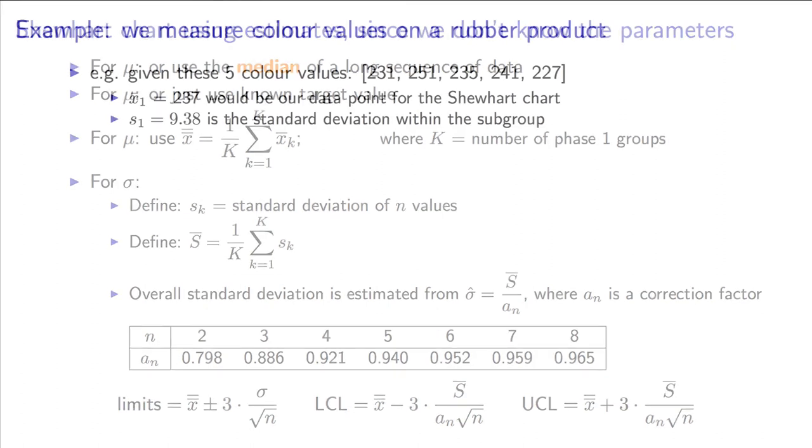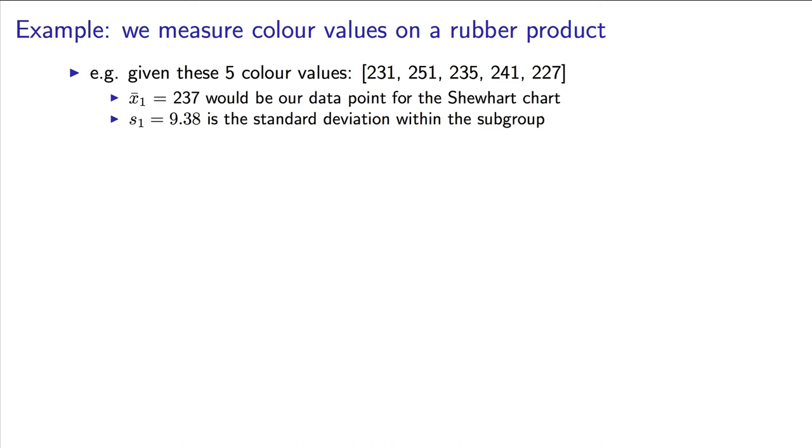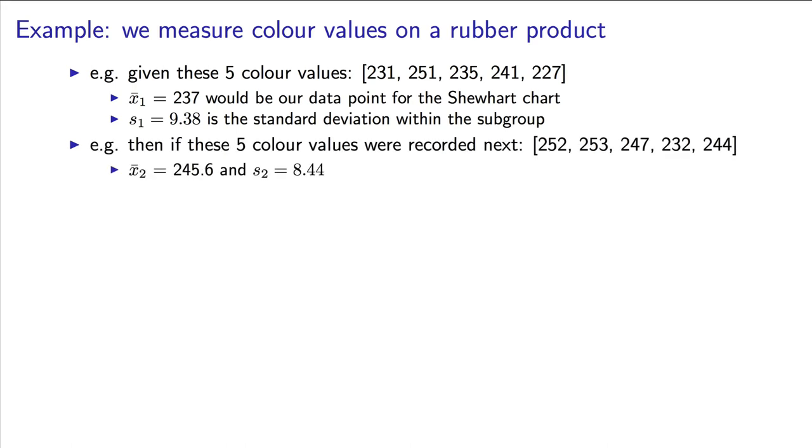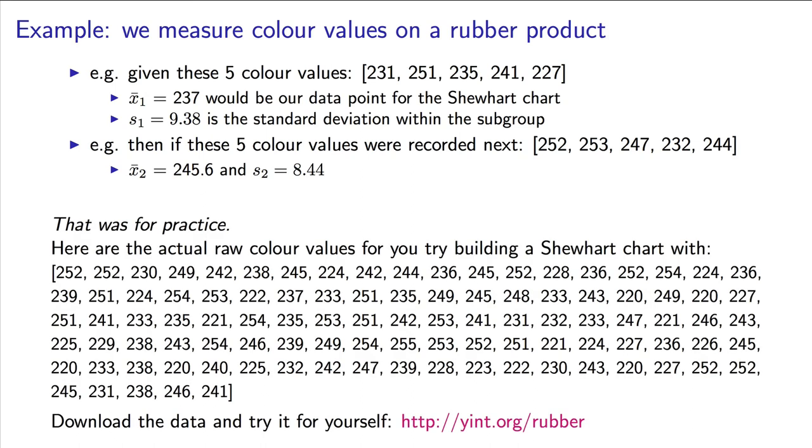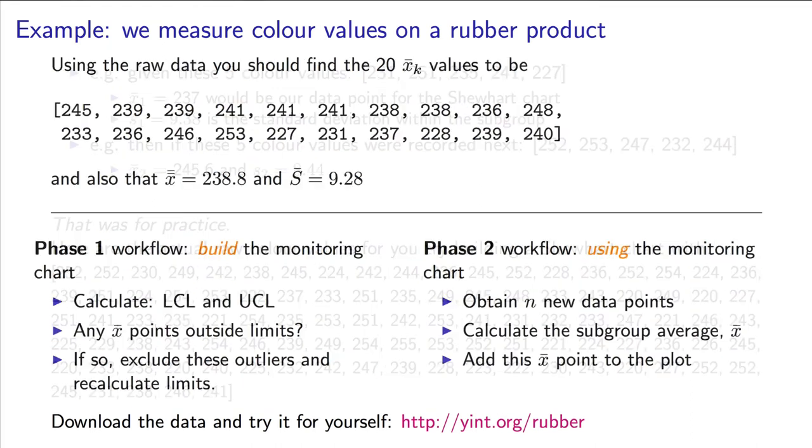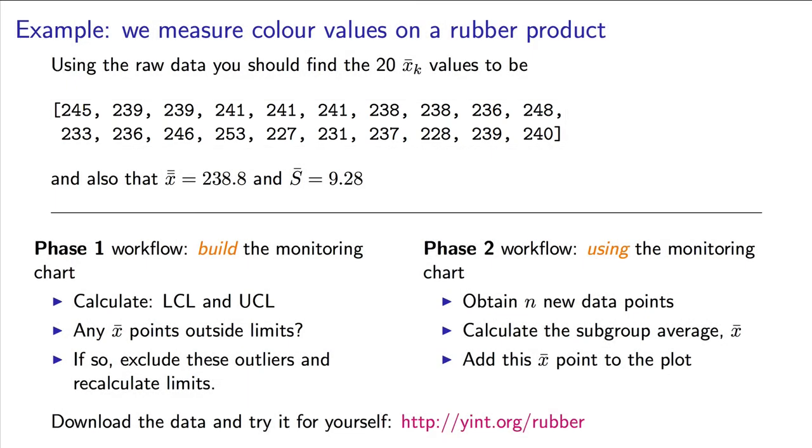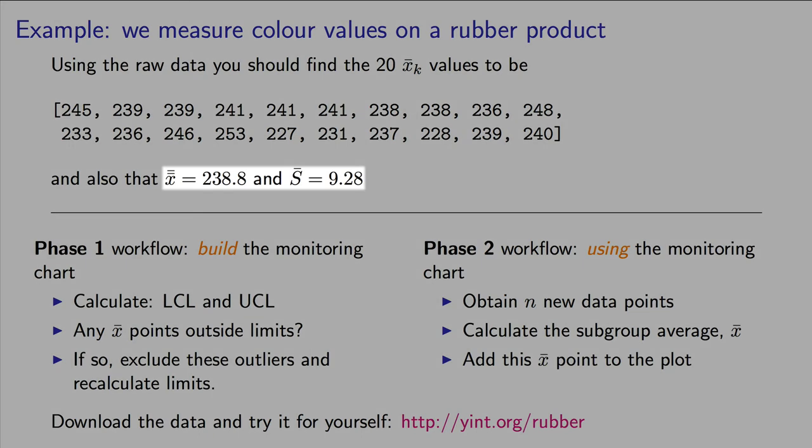So, it's time for an example, and let's use this case where we are measuring the color of a product using a digital camera. We are going to use five values in our subgroup. I've shown the raw data here on the screen, and the average of the first five data points is 237. The standard deviation is 9.38. Now, let's take the next set of five numbers. They are shown here on the screen, and the mean this time is 245.6, and the standard deviation is 8.44. Now, if I had a hundred such raw color values, I could create 20 subgroups, and that's what I've shown now on the screen, the mean of the 20 subgroup values. I've calculated the overall mean of all the 20 subgroups, that's x double bar, as 238.8, and the mean of the standard deviations, I've also recorded for you as 9.28.